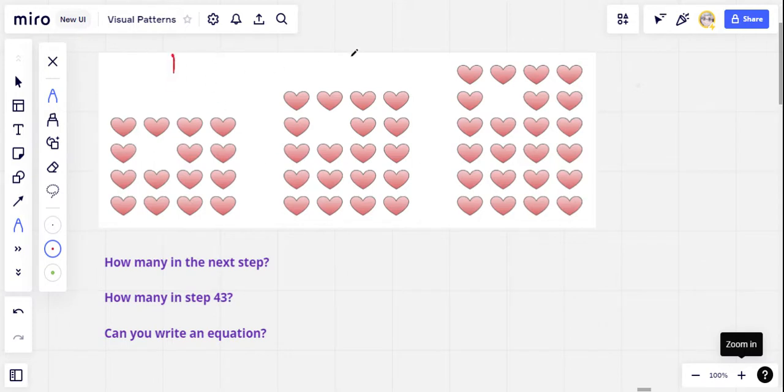Here's our visual pattern. Here's step one. Here's step two. Here's step three. And your job is to look at this pattern and see if you can figure out how many hearts would be in step four.